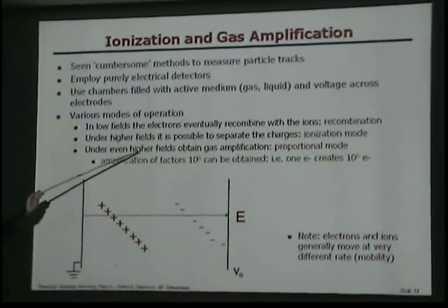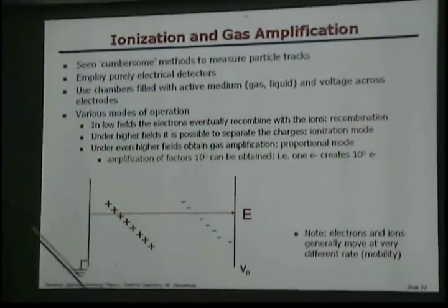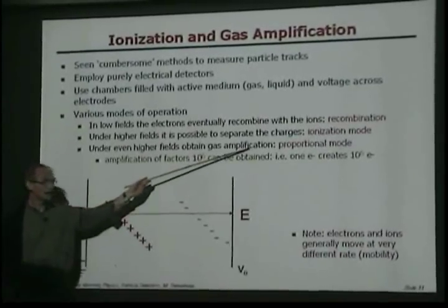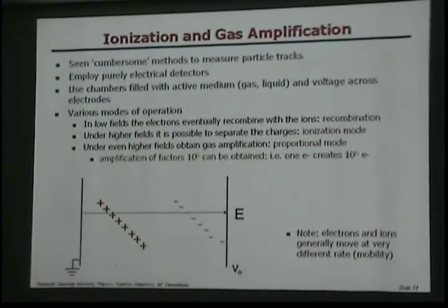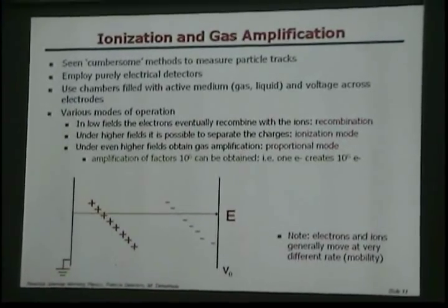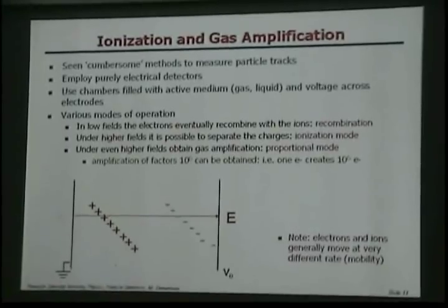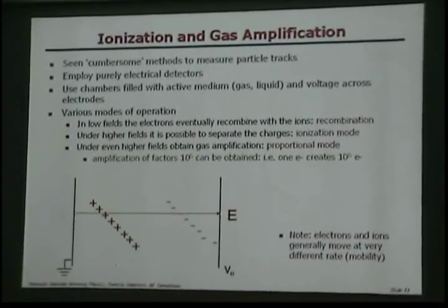If I put even higher voltages across this, then what happens, I can get amplification. That means I operate this chamber in proportional mode. That means that the signal is proportional to the voltage across the electrodes.